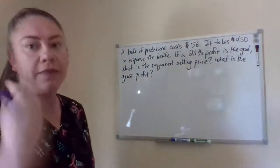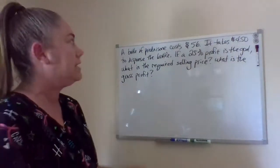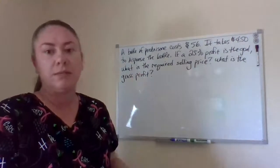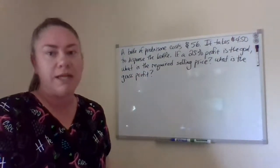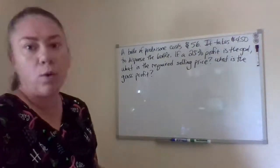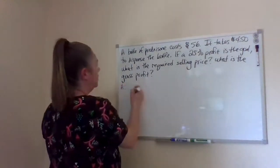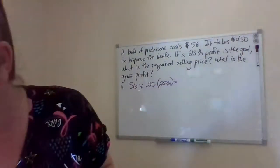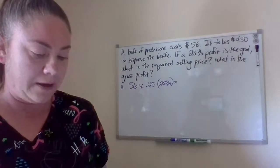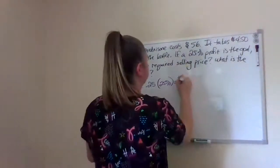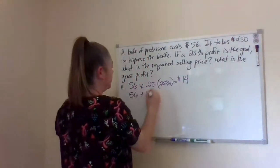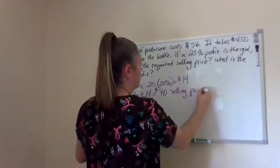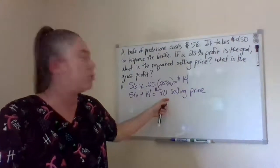A bottle of prednisone costs $56 — again that's the average wholesale price, how much the pharmacy is paying for it. It takes $4.50 to dispense a bottle, so that is our dispensing fee — taking into account pharmacy personnel time, pharmacy supply, shipping, and any cost incurred for maintaining the supply. A 25% profit is the goal. What is the required selling price? For A, we take $56 times 0.25, which is 25%, and we get $14. So we add $56 plus $14, and we get $70. The selling price for a 25% profit is $70.